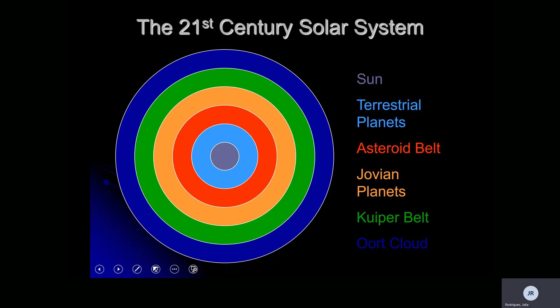Looking at this diagram, our sun is in the center, then we move to our terrestrial planets: Mercury, Venus, Earth, and Mars. Then further out we see our asteroid belt, followed by our Jovian planets: Jupiter, Saturn, Uranus, and Neptune. Even further out beyond Neptune, we have our Kuiper belt, and then even further out from there, an Oort cloud.